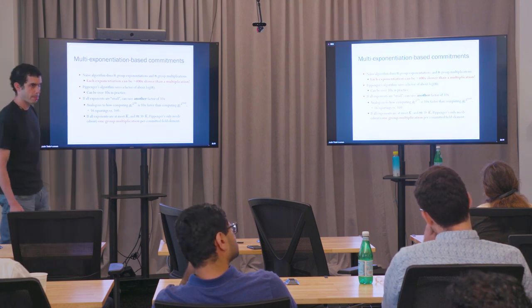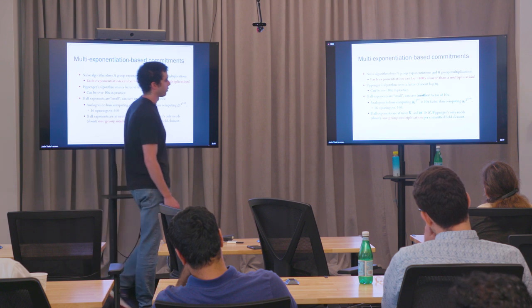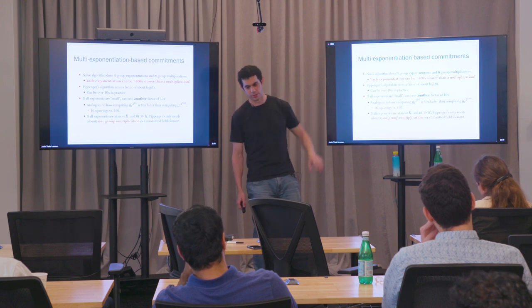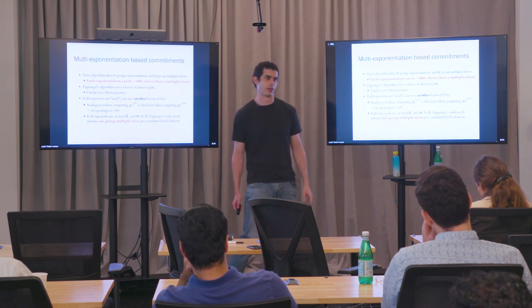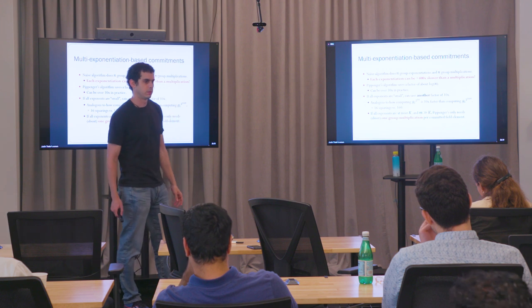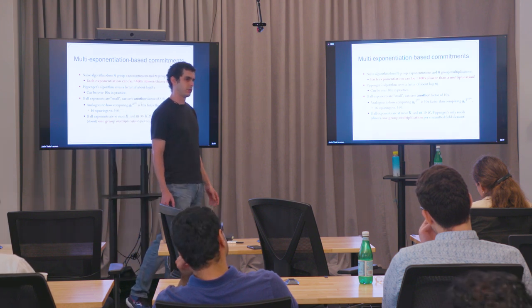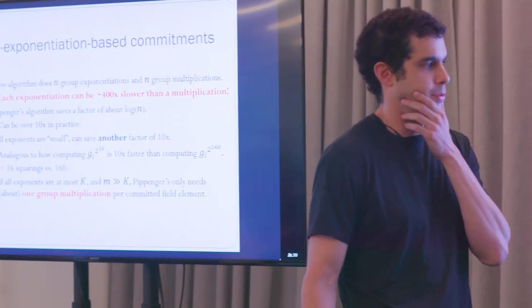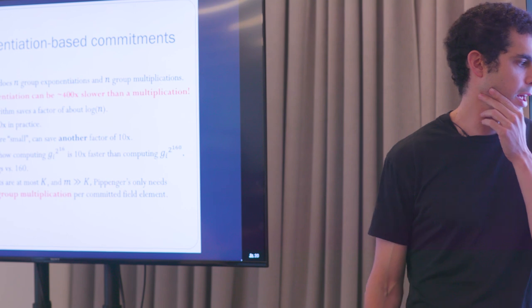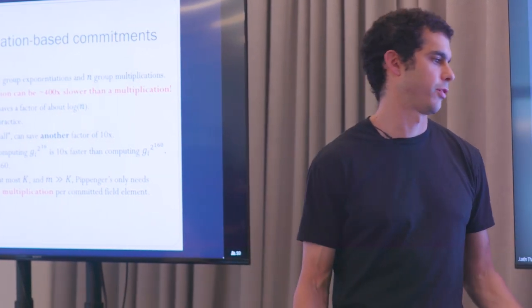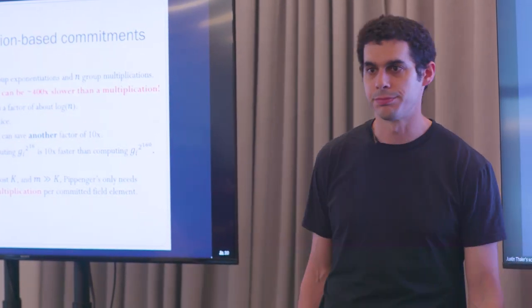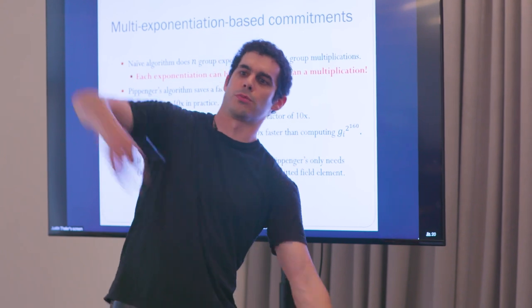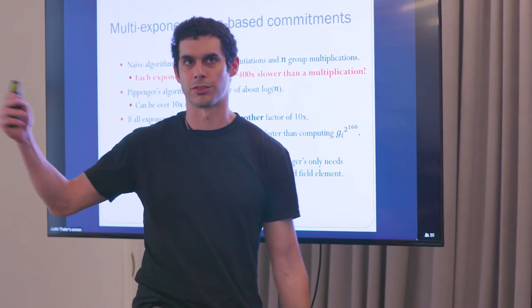If all exponents are at most k, and k is smaller than the group size, you can compute the multi-exponentiation with about one group operation per field element committed — roughly 400 times faster than the naive algorithm when exponents might be random. The SNARKs discussed today are faster for the prover even without small exponents, but the small-k property buys another order of magnitude on top. You can think of n as roughly a million, k as also roughly a million, whereas groups have size 2^256 — so 2^20 versus 2^256.